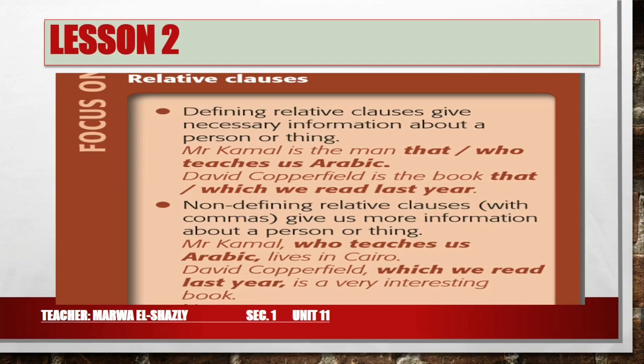On the other hand, non-defining relative clauses — marked with commas — give us more information about a person or a thing, and we can omit them. For example: 'Mr. Camille, who teaches us Arabic, lives in Cairo.' If we omit 'who teaches us Arabic,' we still have 'Mr. Camille lives in Cairo.' The second example: 'David Copperfield, which we read last year, is a very interesting book.' We can omit 'which we read last year' and the sentence still makes sense.